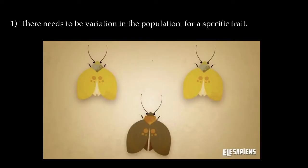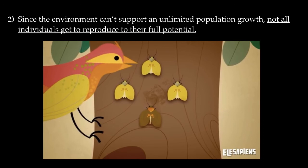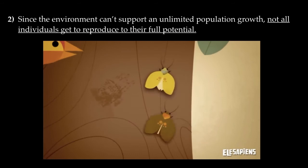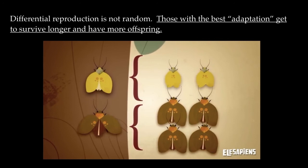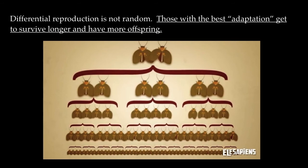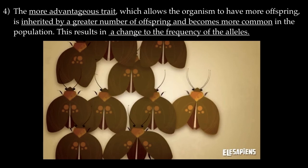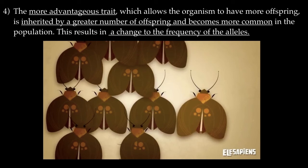Let's say there is variation in a trait within a population, which arises through random mutations, and some forms of that trait increase the organism's ability to survive in its environment. Since the environment can't support unlimited population growth, not all individuals get to reproduce to their full potential. Differential reproduction is not random: those with the best adaptations survive longer and have more offspring. The offspring from those better-adapted organisms will have greater survival and reproductive success — greater fitness. If the trait has a genetic basis, it is passed down to offspring. The more advantageous trait will then be inherited in greater numbers and become more common in the population, changing the frequency of the alleles for that trait.